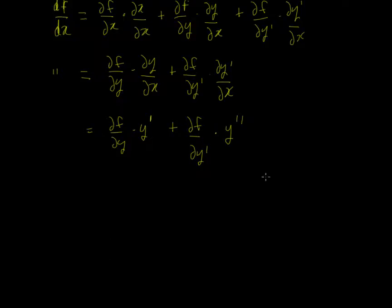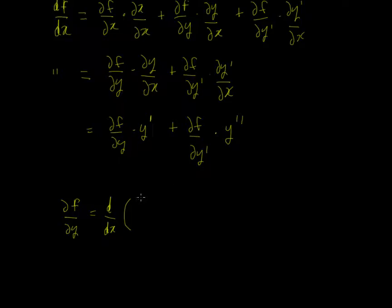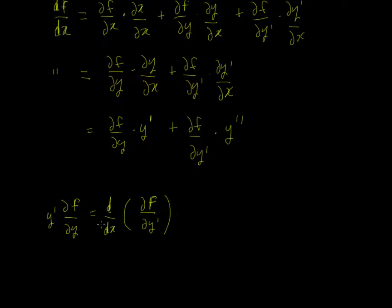Now we look at a few tricks to move forward. If we rearrange the Euler-Lagrange equation, it can be written as: partial f by partial y equals d/dx of partial f upon partial y'. Now if we multiply both sides through by y', we get: y' times partial f by partial y equals y' times d/dx of partial f upon partial y'.